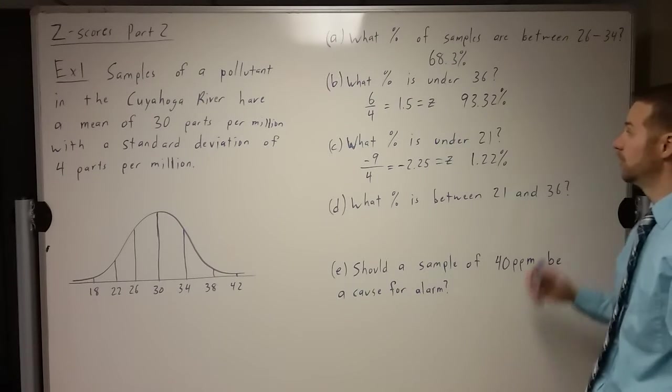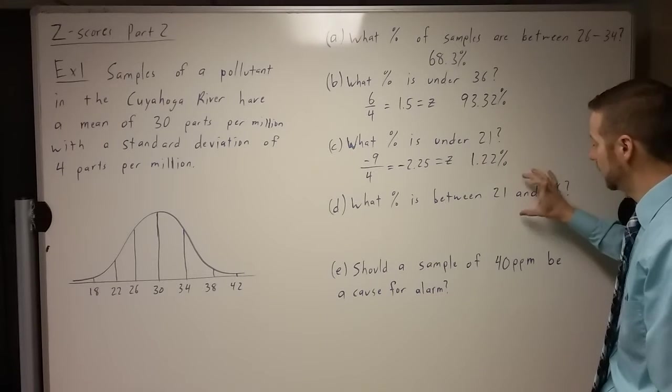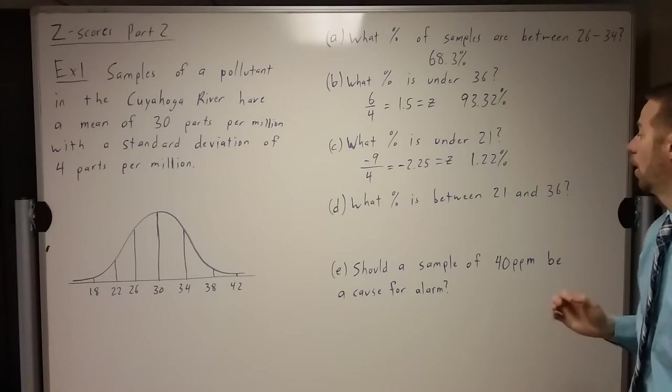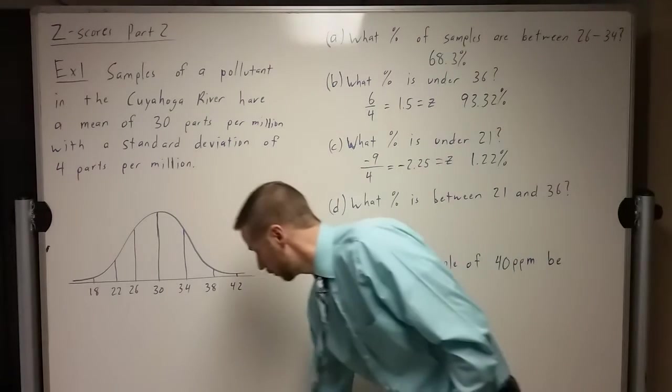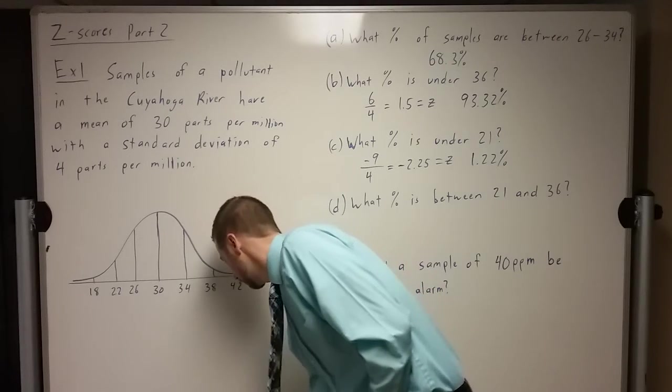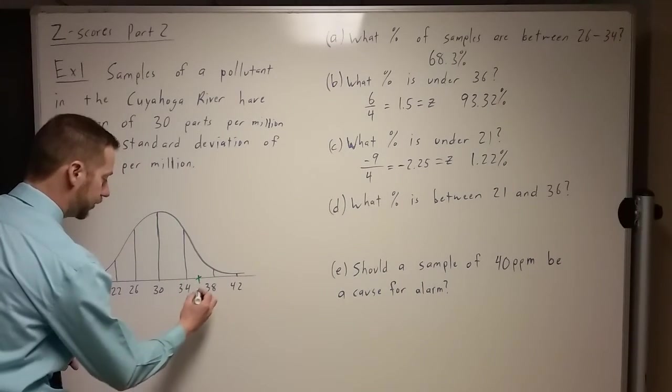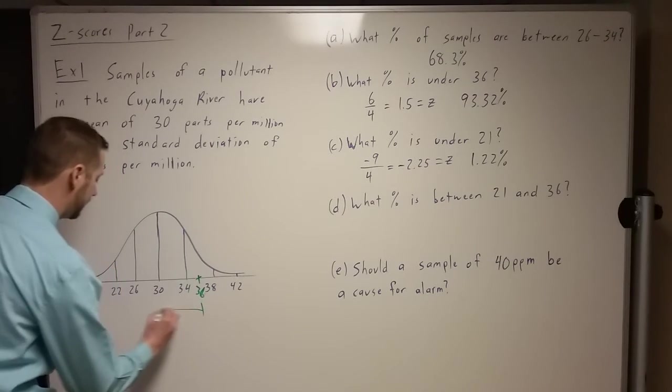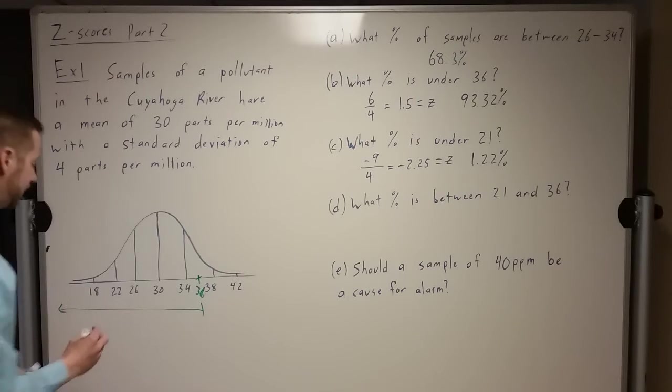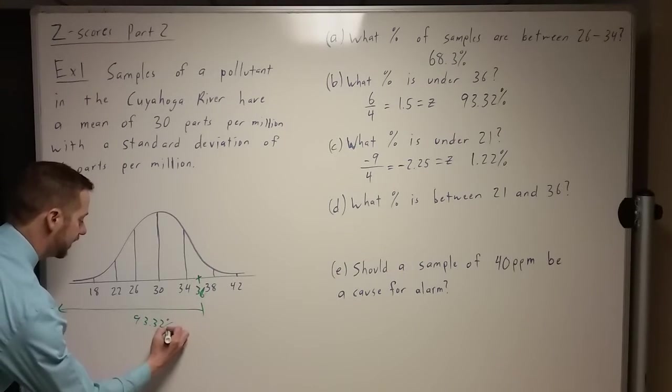So now this is the new part for today. I put these two in here, which we've actually already done, to lead us to the answer to this question. What percent is between 21 and 36? So I'm going to go over here to our visual and help a little bit with this. Here we've got 36, right there is 36. And what we're saying is, from there, down all the way forever, there's 93.32 percent of data.